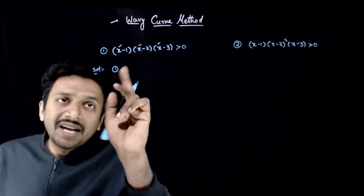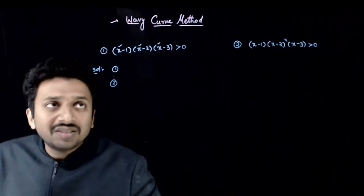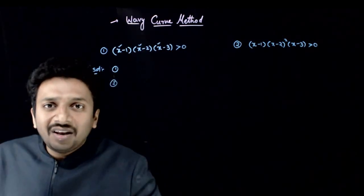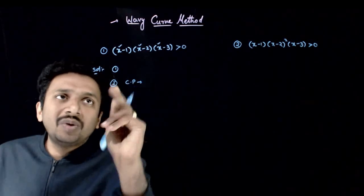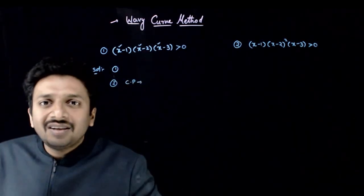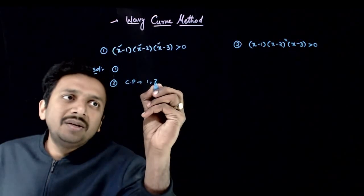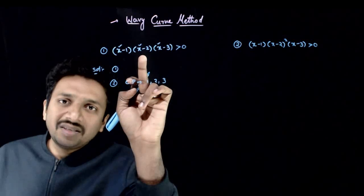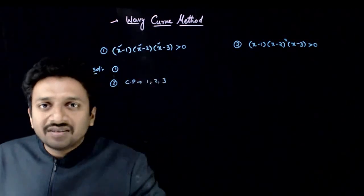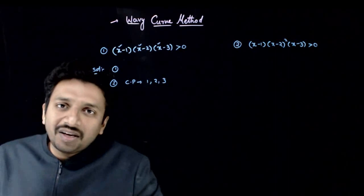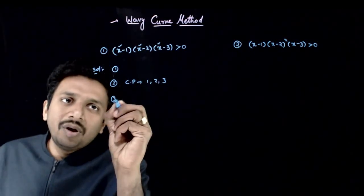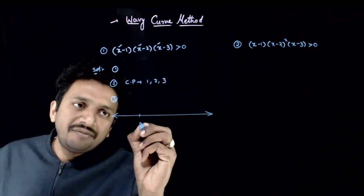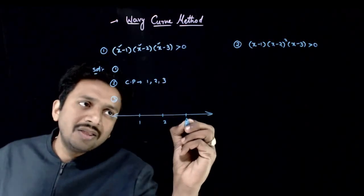In the second step, we identify the critical points. The critical points are the points where each factor is 0 — that is 1, 2, and 3. This factor is 0 at x = 1, this factor is 0 at x = 2, and this factor is 0 at x = 3. Once you identify the critical points, we go to our wavy curve, where we draw the real number line and identify the critical points on it.